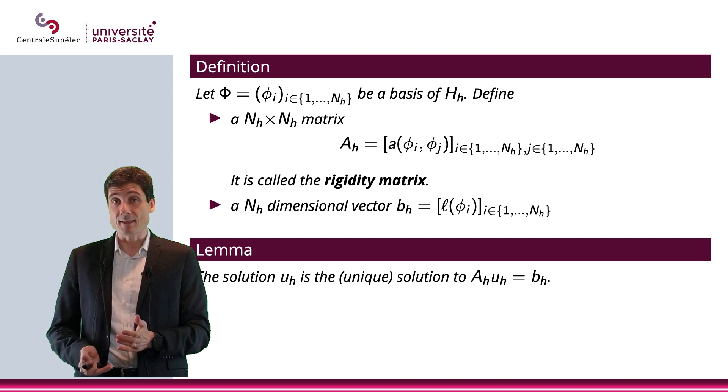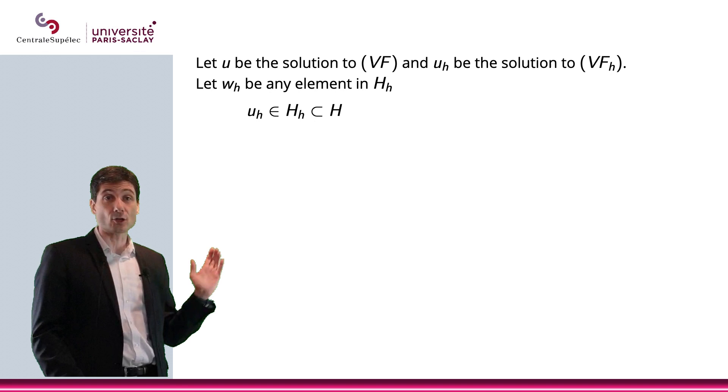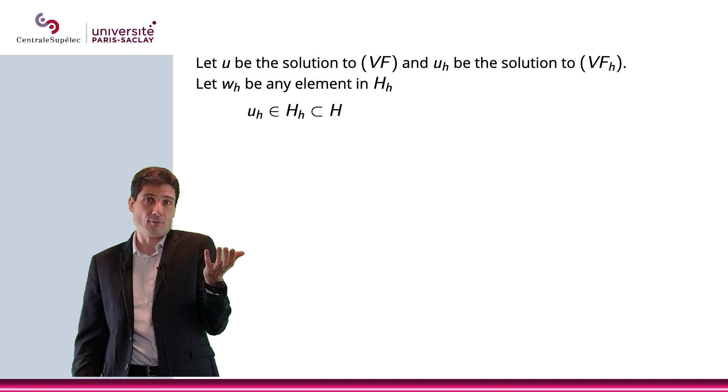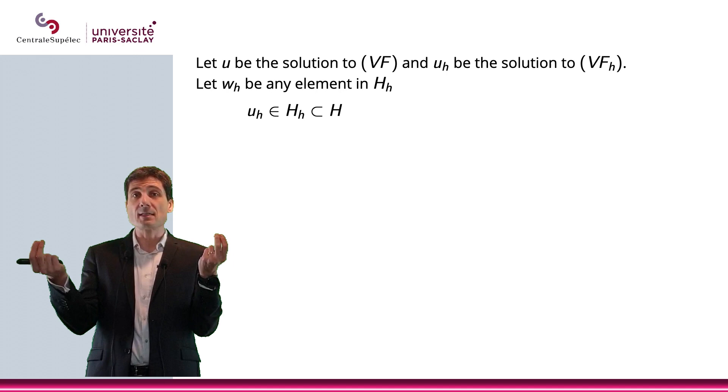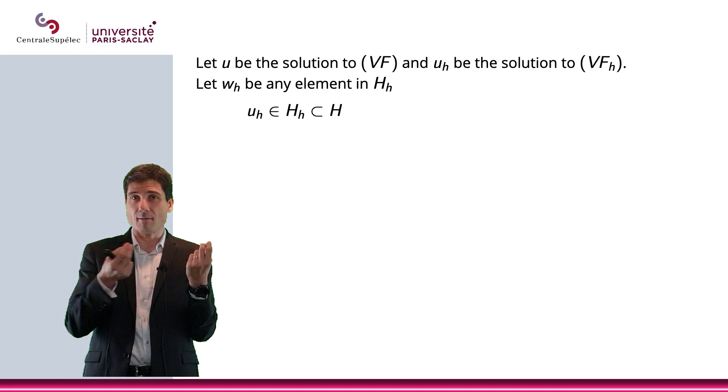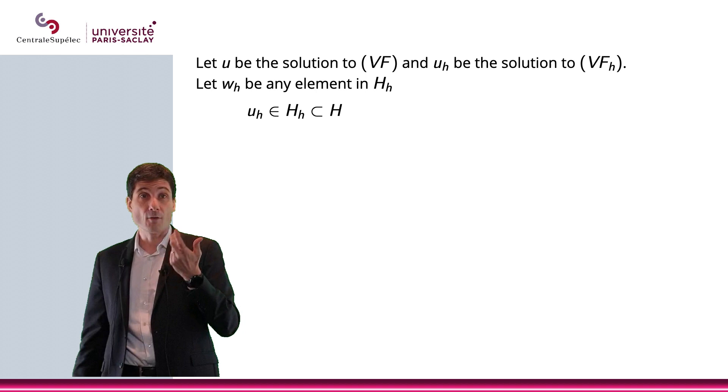Now, there is a question that we make. The question that we make is how do uₕ and u relate? u is the solution to the variational formulation, the one I'm looking for. u is really the function I'm looking for. uₕ is the solution to the variational problem in Hₕ, which is slightly different, obviously. So, the question is, how do these two work together? I mean, what is the norm of the difference, is a good question. What is the norm of the difference between u and uₕ?